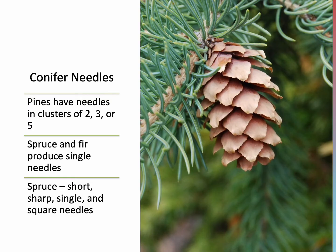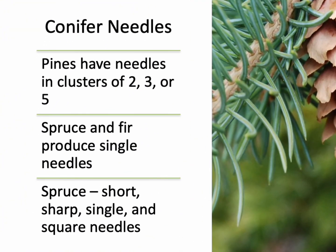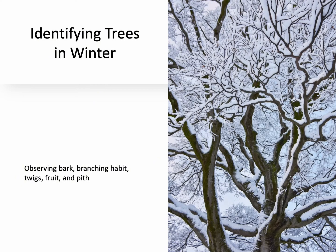Here are a few tips for identifying conifers — gymnosperms. Pines have needles in clusters of two, three, or five. If the needles come out in bundles of two, three, or five, you know you have a pine. Spruce and fir produce single needles — you pull out just one, not a cluster. For spruce, a good way to remember is that the needles are short, sharp, single, and square. In winter, leaves aren't much help, but you can still identify trees by bark and twigs — looking for alternate, opposite, simple, or compound arrangements. You can also look for fruit and even the pith of the twigs.